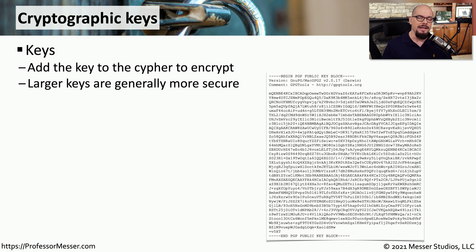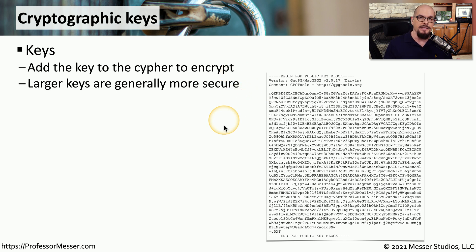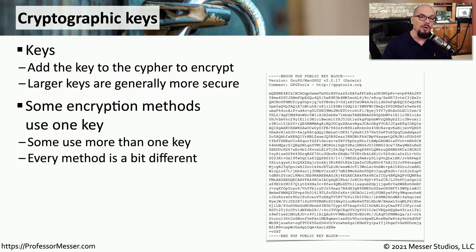When you're encrypting data, it's very common for everyone to understand the encryption and decryption process, and those ciphers are publicly available for anyone to read. The part that is unknown is the key. The cryptographic key is information that is added to the cipher to encrypt the plain text. Usually, larger keys create more secure encrypted data, and sometimes using multiple keys in this encryption cipher creates another level of protection.